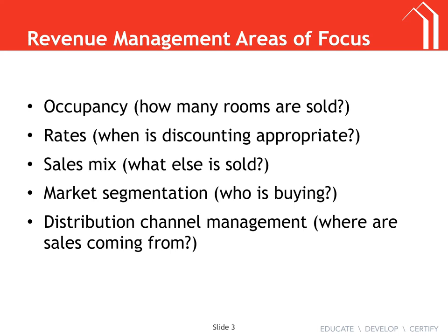Occupancy and rates — our rack rate is ideally what we want to get for a room. Discounts: we want to know when discounts are appropriate and when they should not be taken. For example, during Fiesta in San Antonio. At the La Quinta I worked at, the HEB corporate office was right across the street, so we had an $85 HEB rate that anyone with an HEB name tag and pay stub could get.